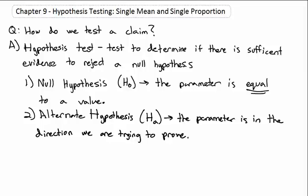In our justice system we never find people innocent — we find people not guilty, or find there is not enough evidence to conclude they are guilty. Similarly in statistics, we will either reject the null hypothesis because there is sufficient evidence, or we will fail to reject it. We are not saying the null is correct — we are just failing to reject it because of insufficient evidence.